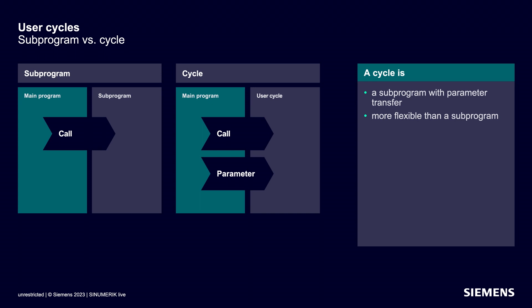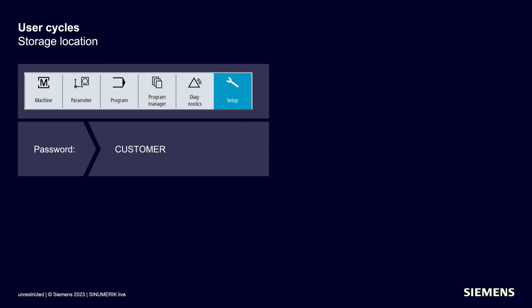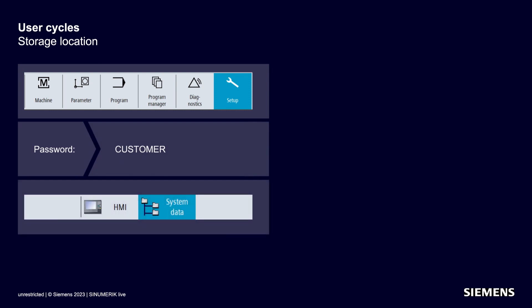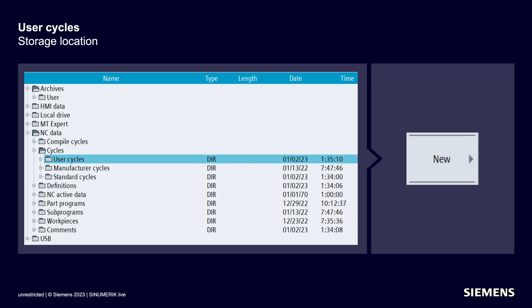The program code of these tested program sequences does not have to be accessible to everyone in the program manager. User cycles are not found in the conventional storage structure for CNC programs. That's why we switch to the Commissioning operating area, enter the password 'Customer', and then switch to the System Data input screen. From here, we navigate via the NC Data folder to Cycles, then to User Cycles, and press New to assign a name.